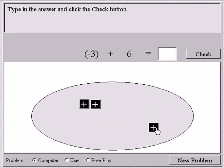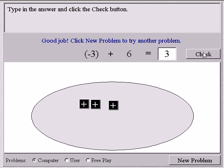So what am I left with? 1, 2, 3. So negative 3 and positive 6 is 3. Let's check it. It says I did a good job.